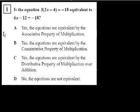We're now going to take the California Standards Test Algebra 1 released questions. The last series I had done the Algebra 2, so I guess I'm going in reverse order. Let me copy and paste this first question because I think it's good to see the whole thing. They are asking us: is the equation 3 times (2x minus 4) equal to minus 18 equivalent to 6x minus 12 equals 18?